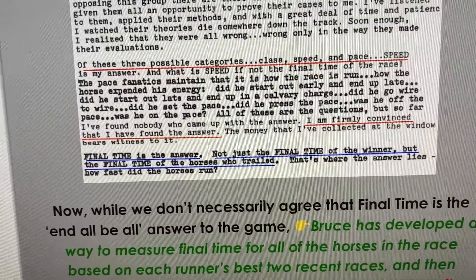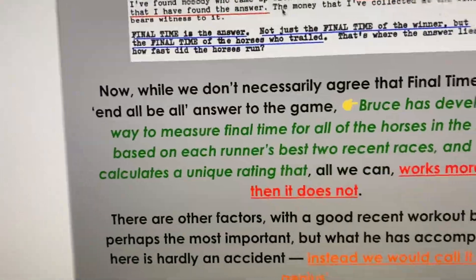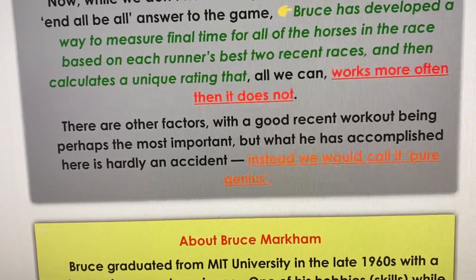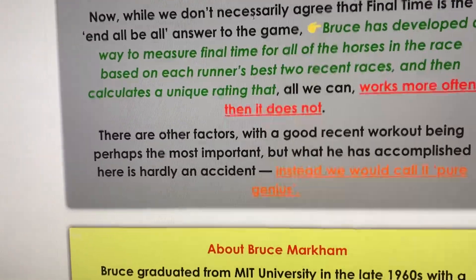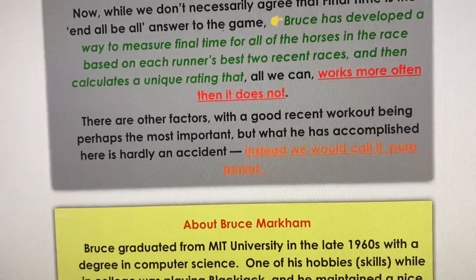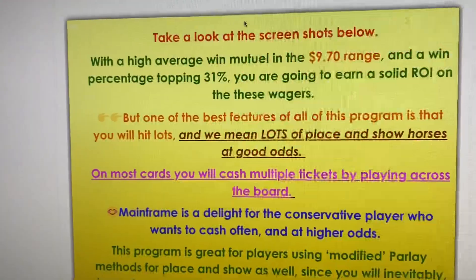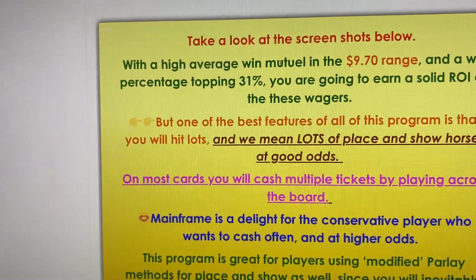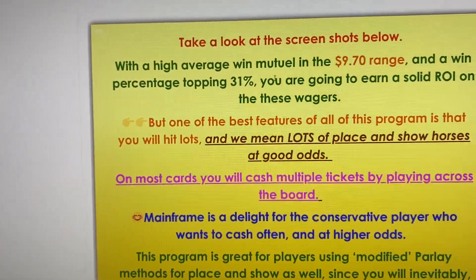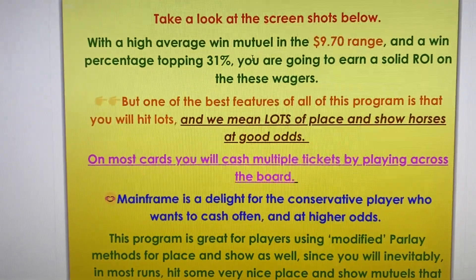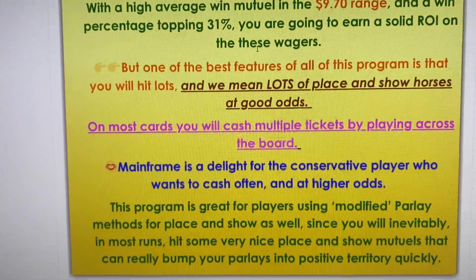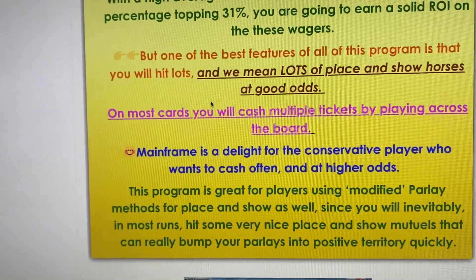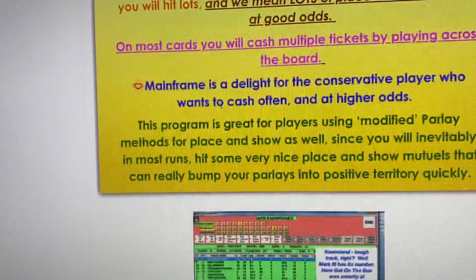It's an extremely consistent system with overall a high average mutuel, and you will get a ton of place and show prices as well as winners. Often the place and show prices are in the 5-to-1 to 30-to-1 range. So you've got not only consistency — across-the-board consistency — but also good price. We found about a $9.70 average win mutuel with 31% winners. Betting the best bets at that rate over the long run, you will show a nice profit. One of the best features is that you will hit lots and lots of place and show horses at good odds, and on most cards you will cash multiple tickets playing across the board.